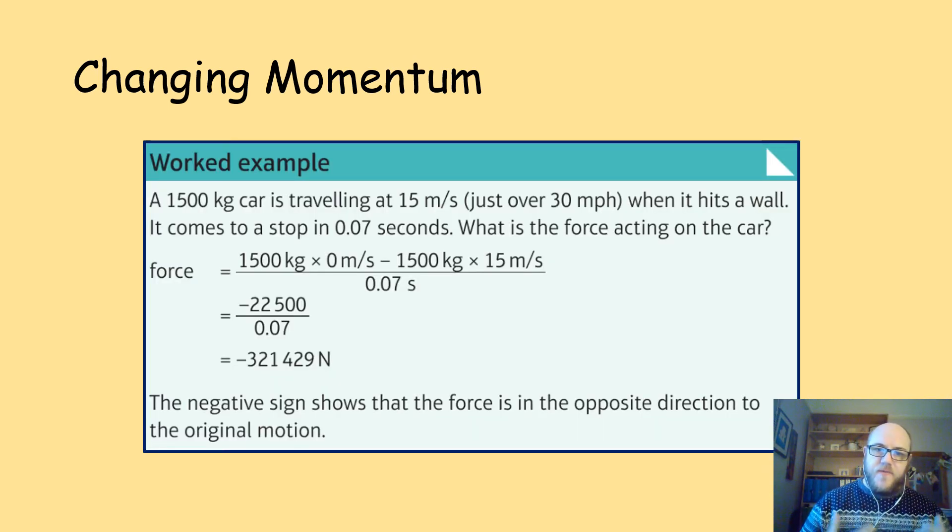Here's an example. The 1500 kilogram car is travelling at 15 metres per second, which is around about 30 miles an hour, when it hits a wall. It comes to a stop in 0.07 seconds. What's the force acting on the car? Well, as I've said, force is the mass times the final velocity, minus mass times the initial velocity, divided by the time taken to collide. 1,500 multiplied by 0 is 0, minus 1,500 multiplied by 15 is 22,500. Divide that by the time taken, 0.07. And that gives you a whopping great force of 321,429 newtons. That negative sign there shows you that force is in the opposite direction to the original motion. So, your car is coming in this way and the force is pushing back that way.